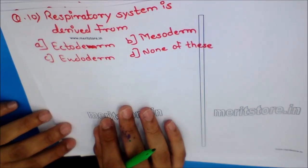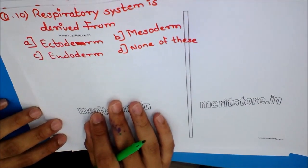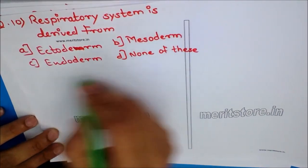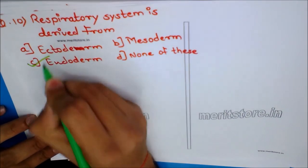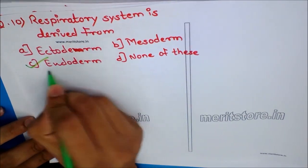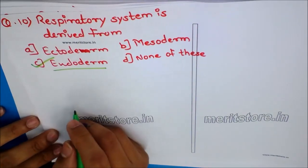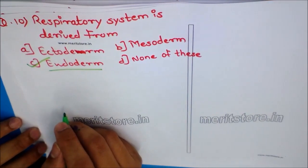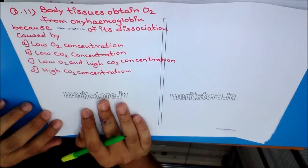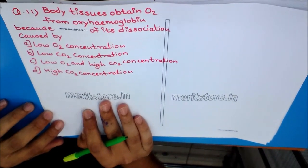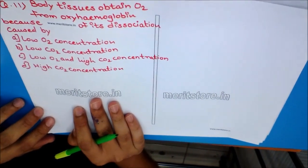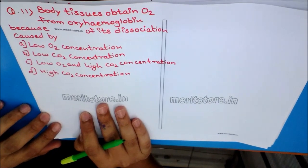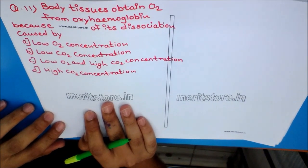Question 10: Respiratory system is derived from? Options: A) Ectoderm, B) Mesoderm, C) Endoderm, D) None of these. This is a straightforward answer to remember — the respiratory system is derived from the endoderm.